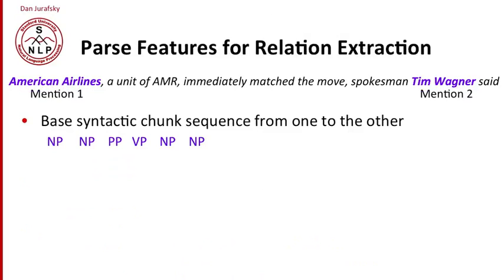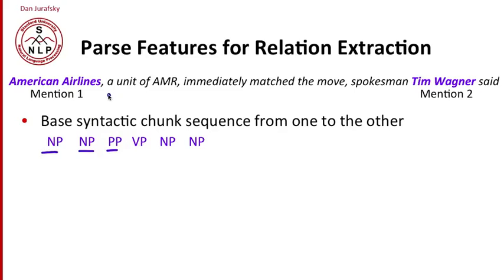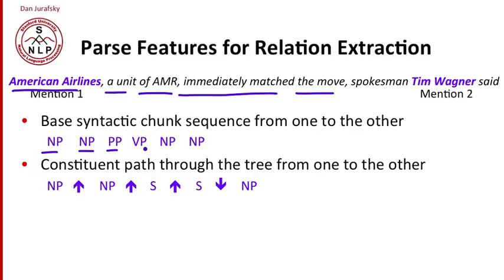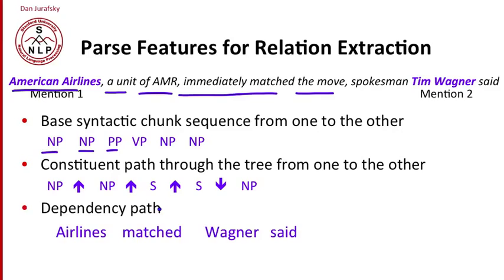We can also use many features related to the parse. Once we parse the sentence, we can extract lots of useful parse features. We can extract a syntactic chunk sequence or base chunk sequence — for example, a noun phrase, followed by a noun phrase, a prepositional phrase, a verb phrase, and so on. We can also run a parser and flatten the parse into what's called a constituent path, showing that a noun phrase's parent is a noun phrase, whose parent is a sentence, and so on. Additionally, we can have a dependency path — for example, the head "said" has an argument "Wagner" and an argument "matched," and "matched" has an argument "airlines." Any of these parse features can be used for relation extraction.